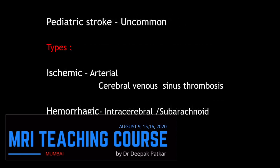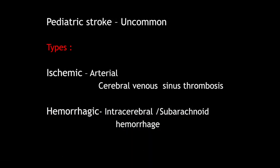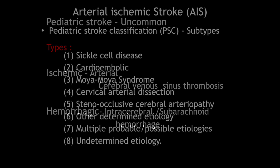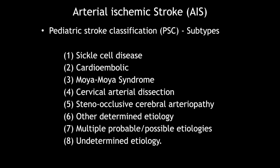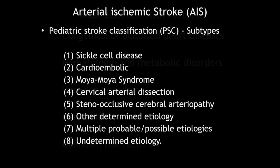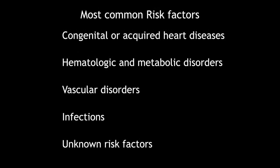Pediatric stroke is uncommon. The types include ischemic stroke due to arterial or cerebral venous thrombosis, or hemorrhagic due to intracerebral or subarachnoid hemorrhage. Arterial ischemic strokes in the pediatric age group have specific subtypes, with the most common risk factors being congenital or acquired heart diseases, as in our case. Other risk factors include hematological and metabolic disorders, vascular disorders, infections, and uncommon risk factors.